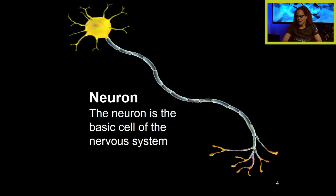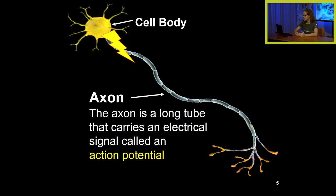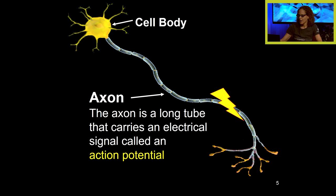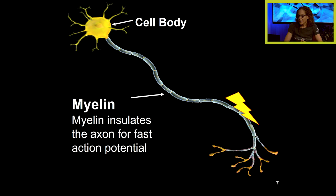Let's talk about the neuron, which is the basic cell of the nervous system. We have a cell body and an axon, which is a long tube that carries an electrical signal called an action potential. An action potential is the electrical signal carried down the axon, and it usually goes in one direction.